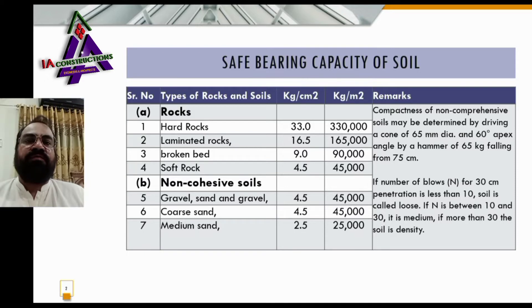First we will discuss four types of rocks. Number one: hard rock, which has a bearing capacity of 33 kg per centimeter square and 330,000 kg per meter square. Number two: laminated rocks, which have a bearing capacity of 16.5 kg per centimeter square.